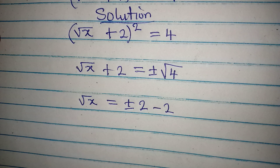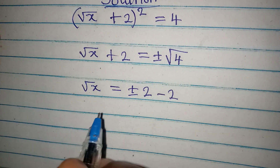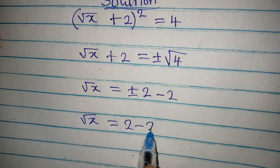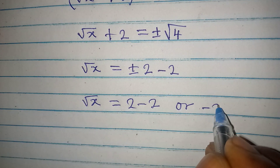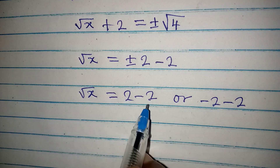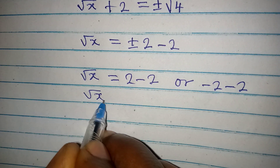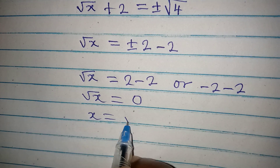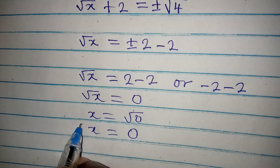We can express this in two ways. It is either square root of x equals 2 minus 2, or it equals minus 2 minus 2. Taking the first case, square root of x equals 2 minus 2, which means square root of x is equal to zero. So x is equal to zero.